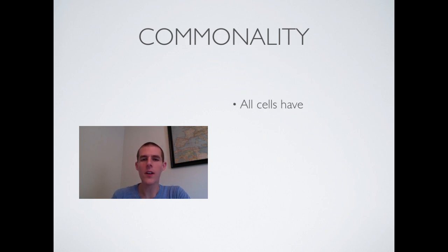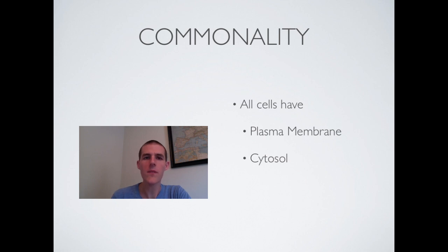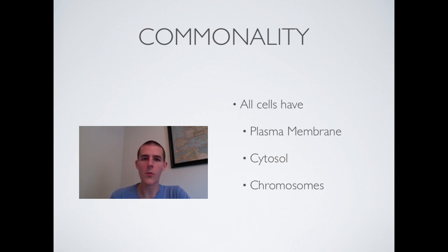All cells have got a few things in common. Every single cell has got a plasma membrane — that would be the flexible phospholipid bilayer that surrounds the outside of the cell. Even if they have a cell wall, as in the case with a plant, they still have a plasma membrane on the inside of that cell wall. Every cell also has cytosol, which you probably know as cytoplasm — the jelly-like substance in the middle of the cell. The third thing all of them have are chromosomes, which would be genetic material. And finally, every cell has got ribosomes, so it's got the basic machinery it needs to make proteins and stay alive.